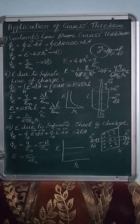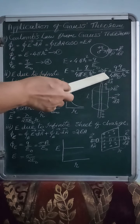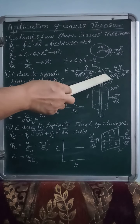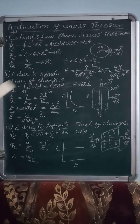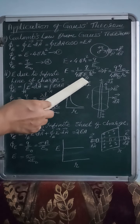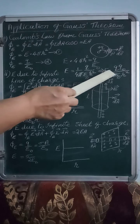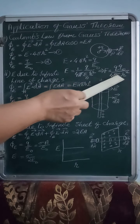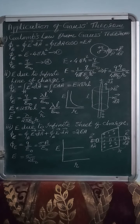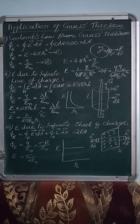We know Coulomb force is F = E·Q₀. Substituting the expression for E, we get the Coulomb force F = QQ₀/(4πε₀r²). This is the formula for Coulomb force. We started from Gauss theorem and obtained Coulomb's law. So this is the first application: how to deduce Coulomb's law from Gauss theorem.